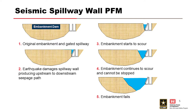Pictorially, you have the embankment dam and the spillway — with spillway gates if water is being retained. The earthquake damages the spillway wall, producing an upstream-to-downstream seepage path connecting to the reservoir. The embankment starts to scour, the progression can't be stopped, intervention is unsuccessful, and the embankment fails.